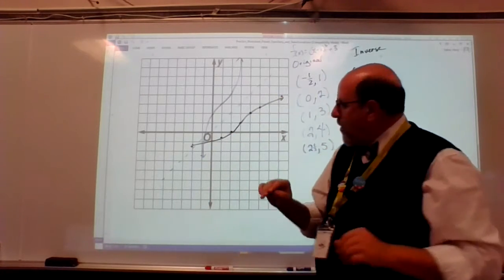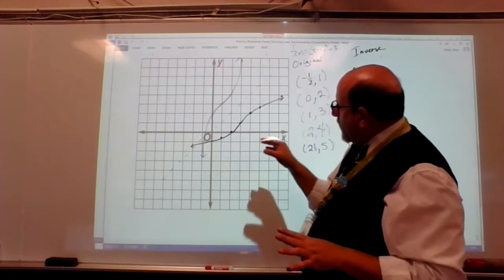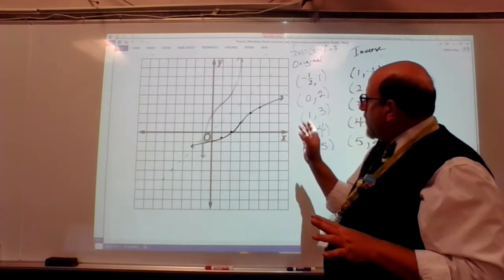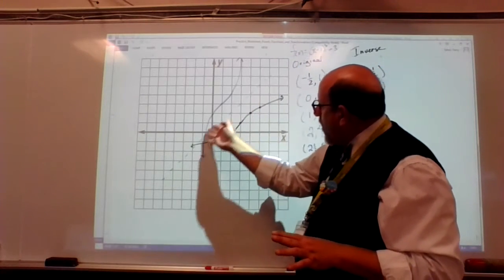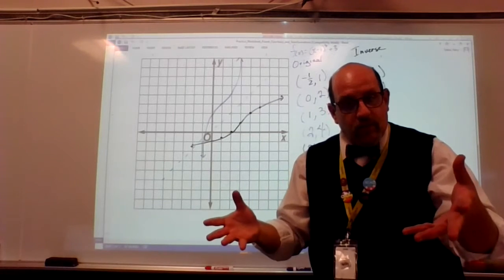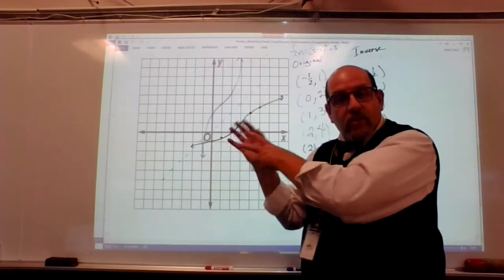And what it should show, and I was relatively close, not perfect, but I was relatively close to this, is you want to show a reflection over the function, over the identity function. f of x equals x.